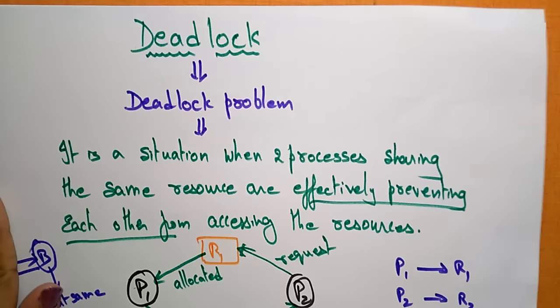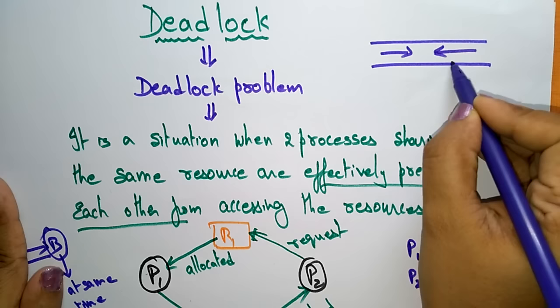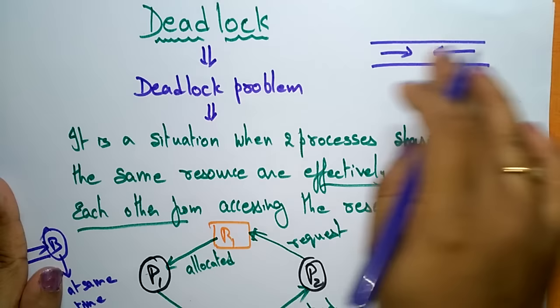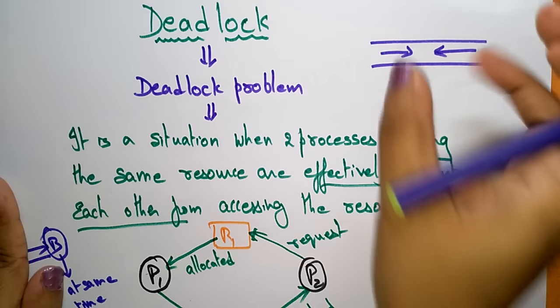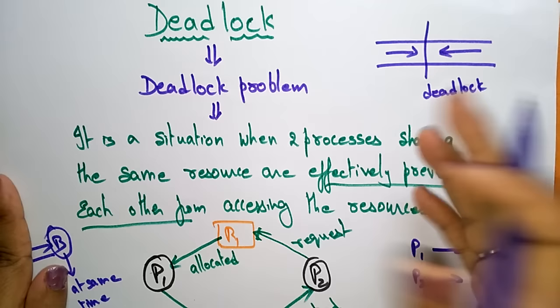Another example: consider a narrow road where one vehicle is coming from one side and another vehicle is coming from the other side. Each vehicle wants to cross the other, but there is no space to cross. Either one vehicle must go back so the other can pass, but neither is ready to go back. This situation is called a deadlock — no one is ready to go back, and there is no space to cross.